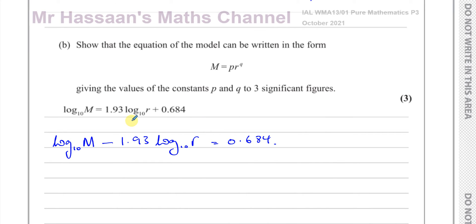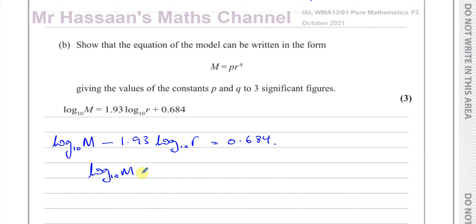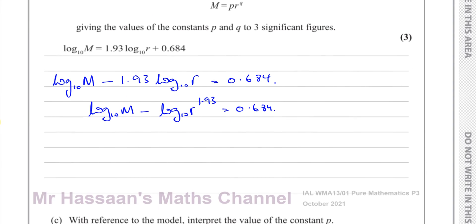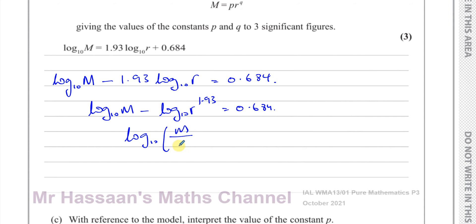One way to solve this is to combine the logarithms into one term. First, I use the power law to rewrite 1.93 log base 10 of r as log base 10 of r to the power of 1.93. So we have log base 10 of M minus log base 10 of r to the power of 1.93 equals 0.684. Then using the division law: log base 10 of M over r to the power of 1.93 equals 0.684. Using the definition of a logarithm, this means 10 to the power of 0.684 equals M divided by r to the power of 1.93.